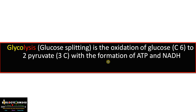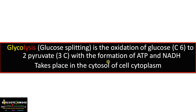Hi friends, welcome to biology exams4a.com. Today's topic is the 10 steps of glycolysis, enzymes involved, and regulatory steps in detail within 5 to 10 minutes. Glyco means glucose and lysis means breakdown. It is a splitting of glucose, a 6-carbon compound, to form 2 pyruvate molecules, which are 3-carbon, with the formation of ATP and NADH. Glycolysis occurs in the cytosol in both prokaryotes and eukaryotes. It is a universal and anaerobic process where oxygen is not required.